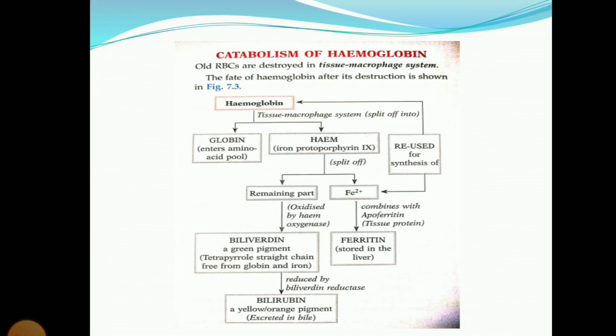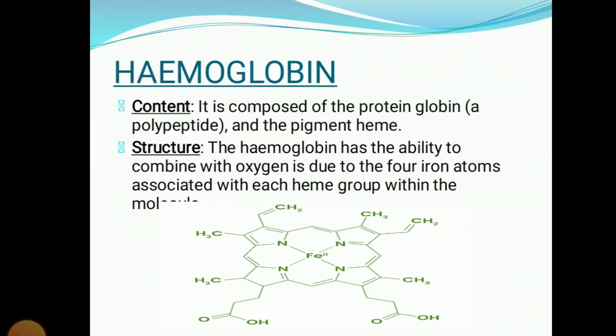At the end of this lecture I will provide some important questions regarding hemoglobin, which are very important from an exam point of view. So, looking at this chart, we can see hemoglobin is being divided into heme and globin. The heme is the pigment part and globin is the protein part.